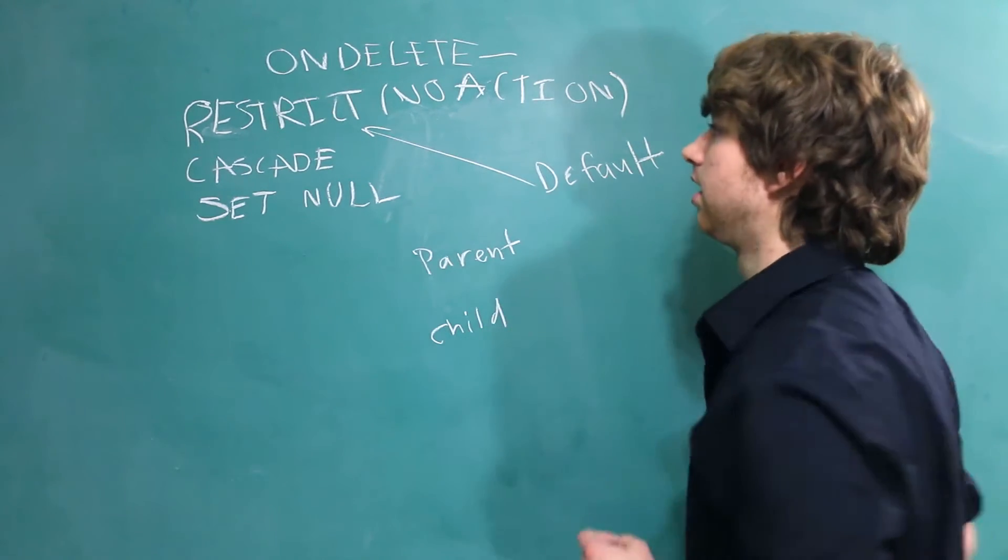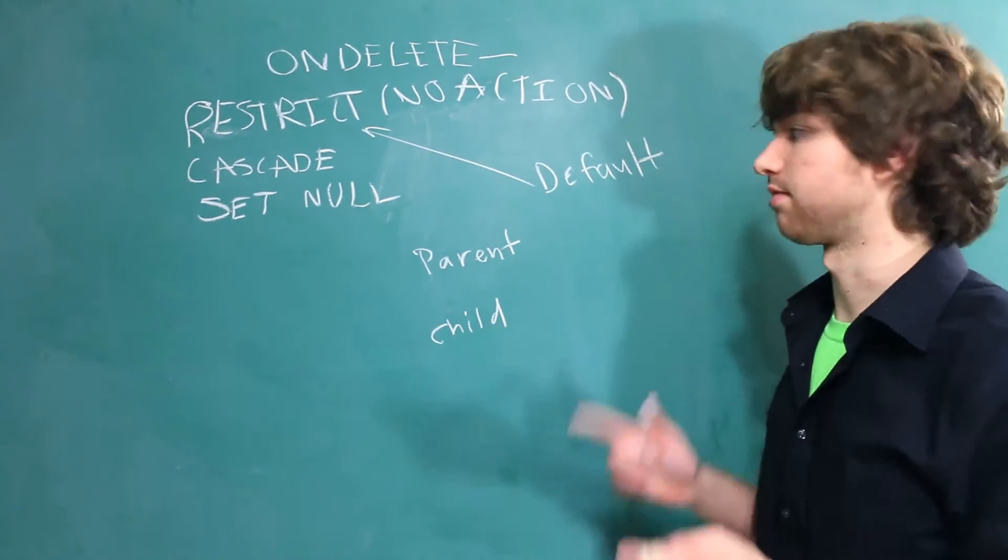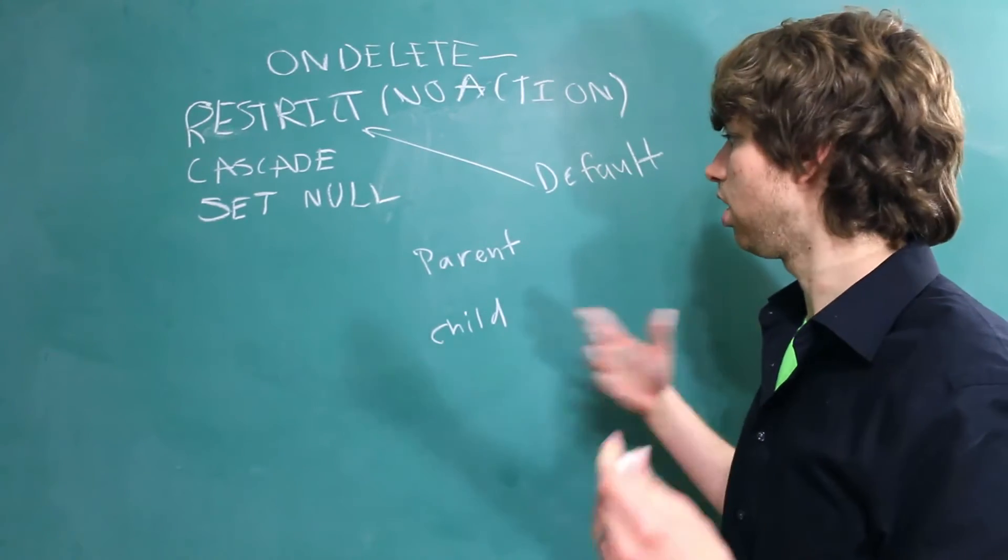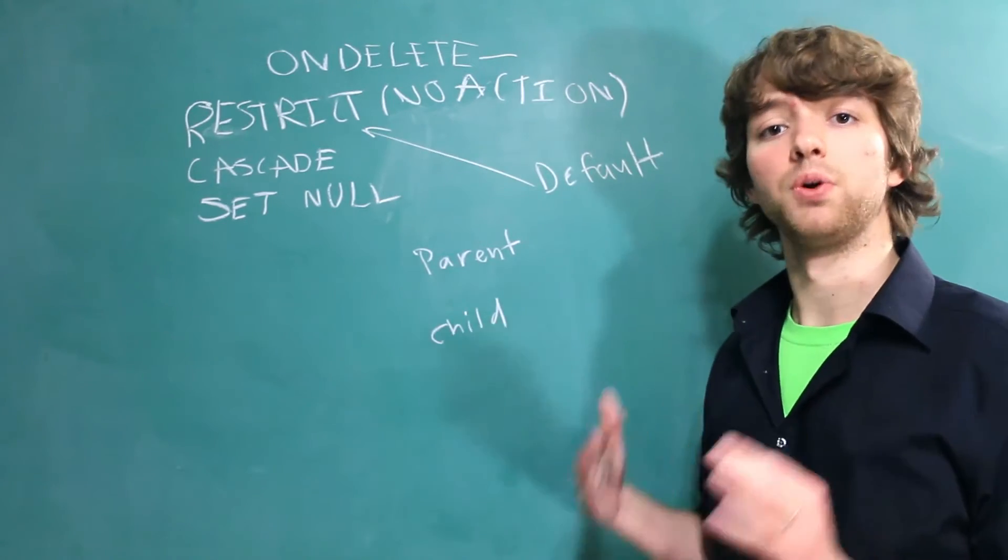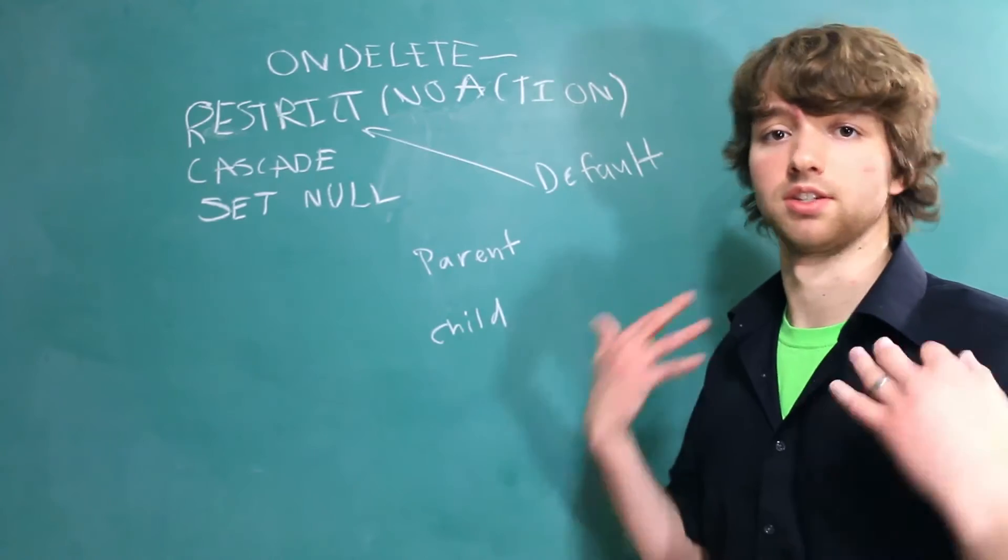The first one, Restrict, is literally just going to prevent us from deleting the parent. That's the default. So if you go and delete the parent row, you're going to get an error, and MySQL is not going to let you do that.